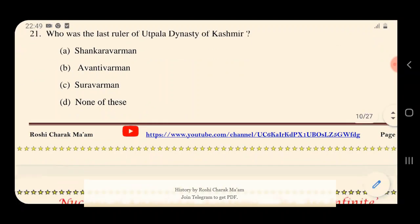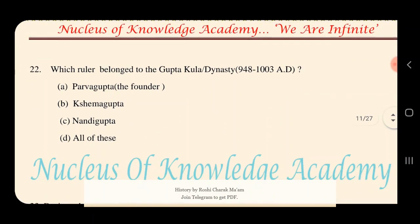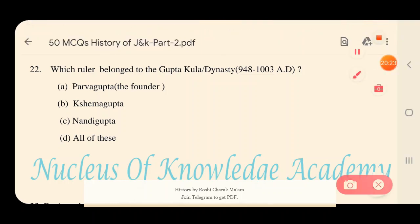Question 22: Which ruler belonged to the Gupta Kula or Gupta dynasty? Options: A) Parvagupta, B) Kshemagupta, C) Nandigupta, D) All of these. The answer is D — all of these rulers belonged to the Gupta dynasty.